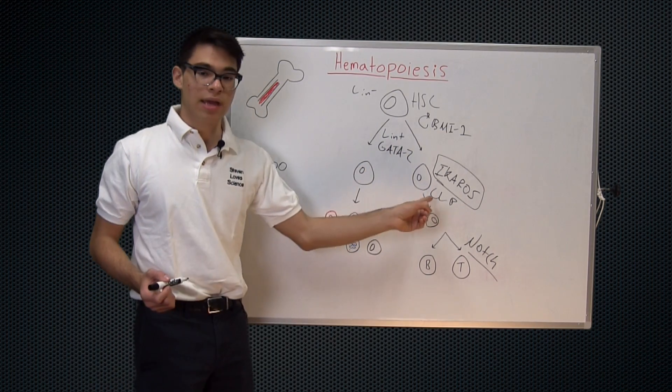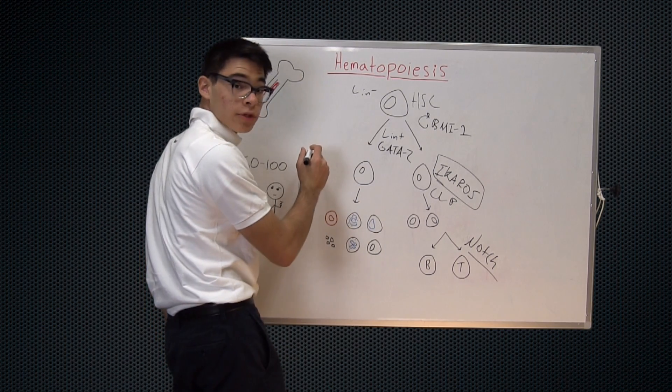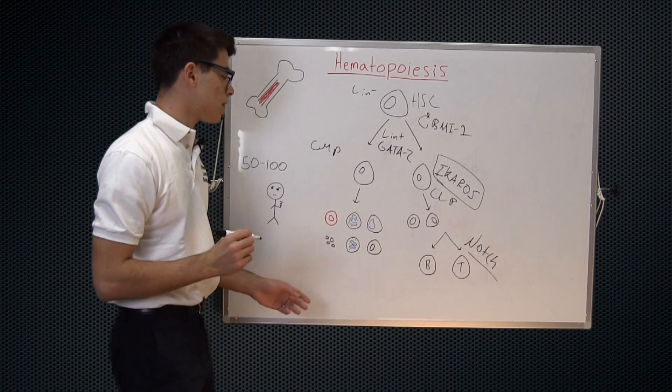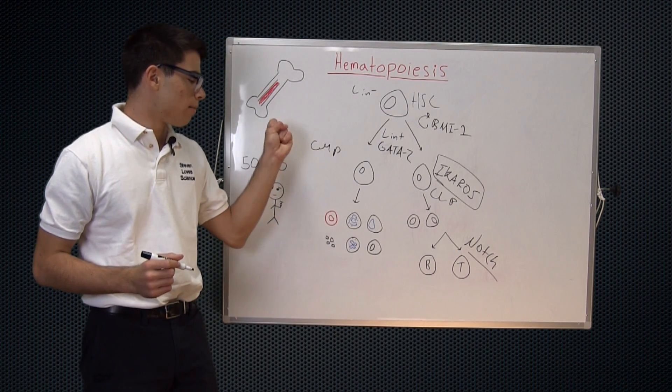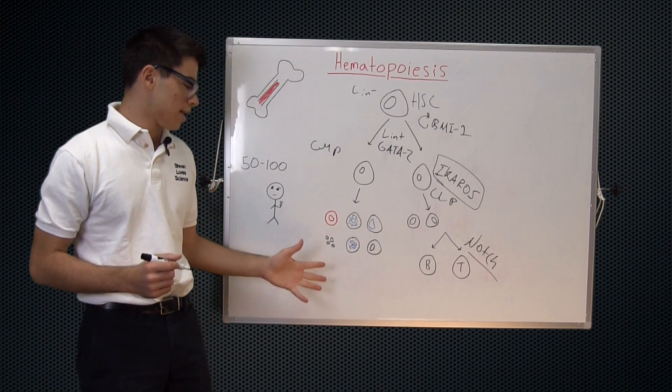Once again, instead of being a common lymphoid progenitor at this stage, we have a common myeloid progenitor or CMP. So the common myeloid progenitor, once again, can either become a red blood cell, erythrocyte or any of these myeloid cells down here.